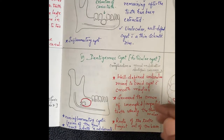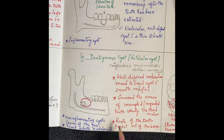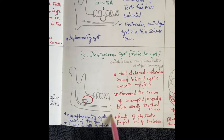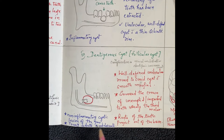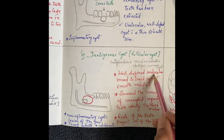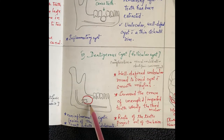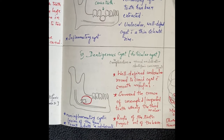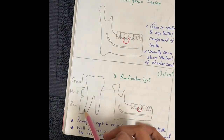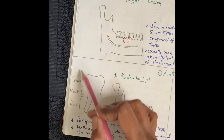The dentigerous cyst is also called the follicular cyst. It is a non-inflammatory cyst that occurs in young adults and adolescents. It is a well-defined, unilocular, round to ovoid cyst with smooth margins. It surrounds the crown of an unerupted or impacted tooth — usually the third molar. The crown is surrounded by the cyst.